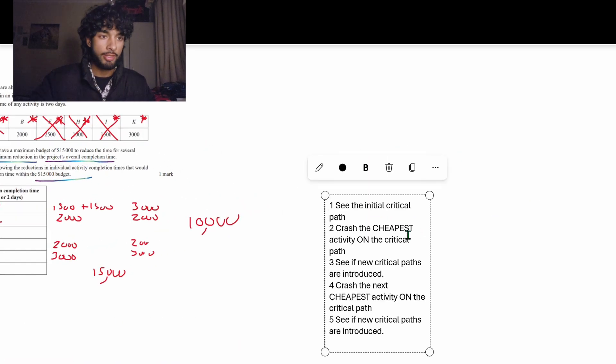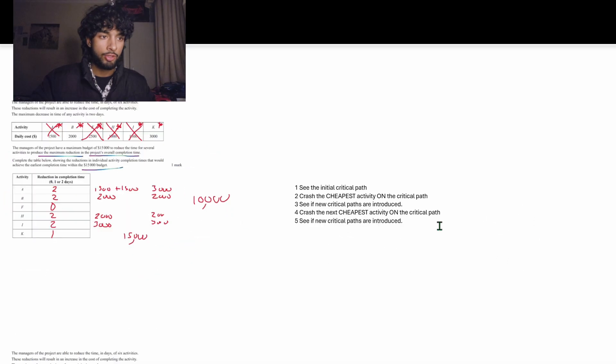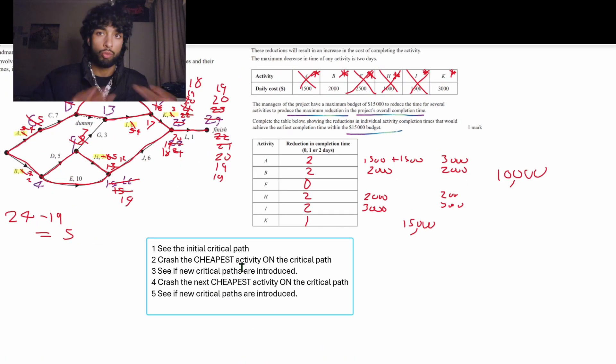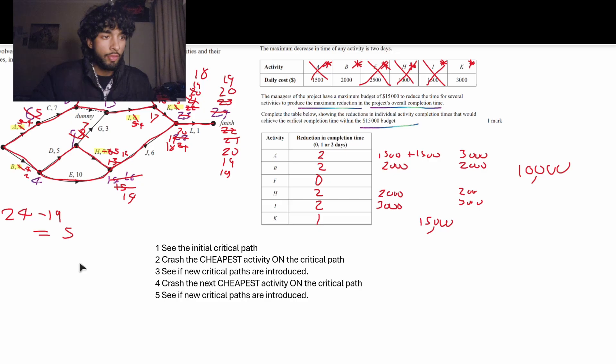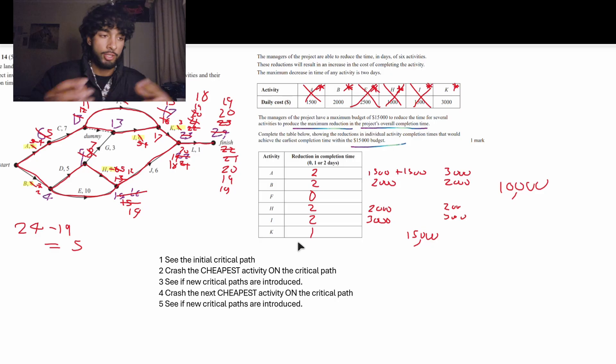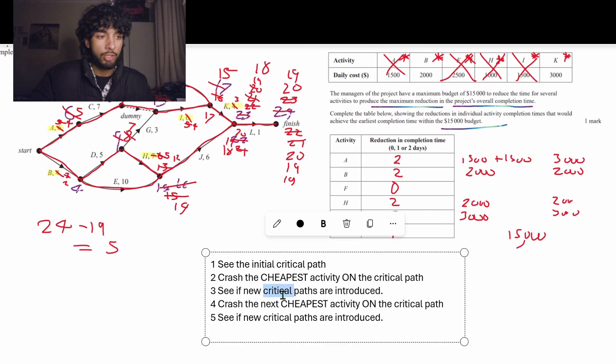So let me summarize both methods. In the first method, we saw the critical path without doing anything, without doing any reductions. Then we crashed the cheapest activity on the critical path because we want to minimize the amount we're spending. Then we saw if new critical paths are being introduced. And we kind of repeated this cycle until the budget has been maxed out.